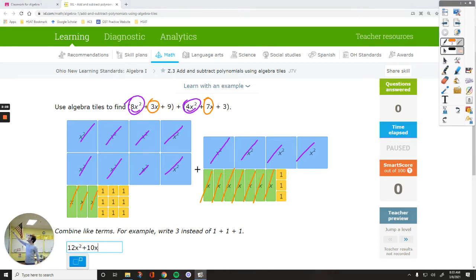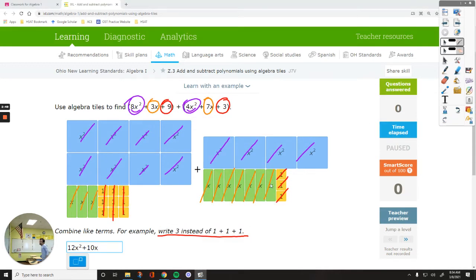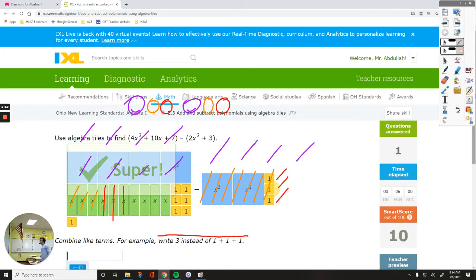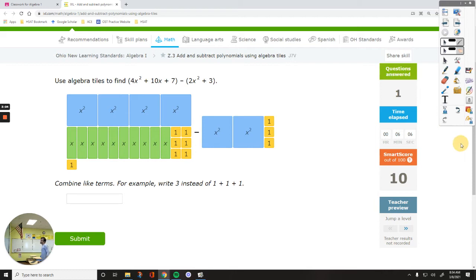Then let's see how many ones we have. I think we have 9 in here, then 10, 11 and 12. We have 12 of those ones and it says for example write 3 instead of 1 + 1 + 1. We have 12 of them, so you write positive 12. That's basically what we do for this assignment. Let's submit it.